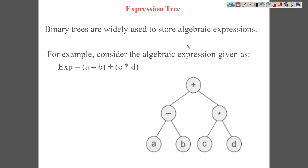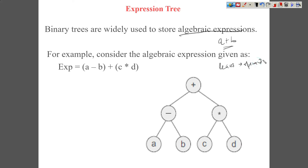In an expression tree, an expression is basically comprising of operands and operators. For a simple expression like a plus b, when we construct a tree, we will find that the operands are always going to become leaves. So in the expression tree, the leaves are basically represented by the operands used in the expression, and the internal nodes are basically the operators.